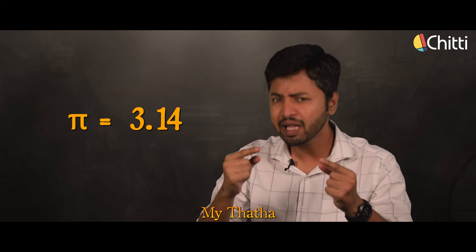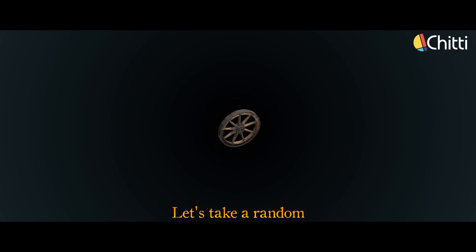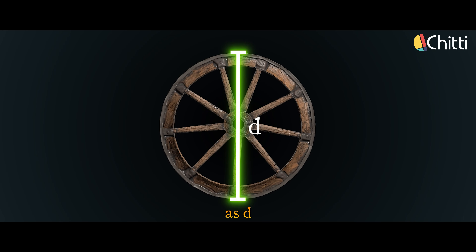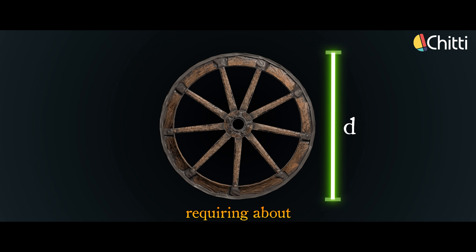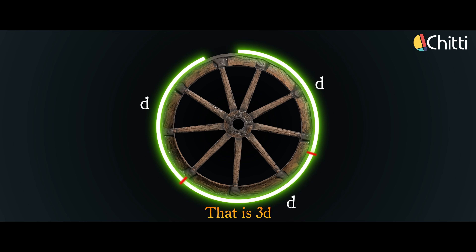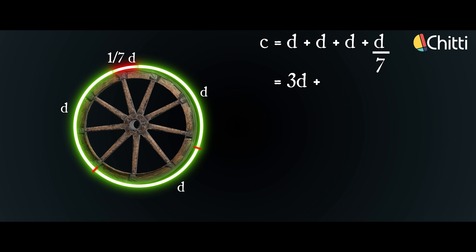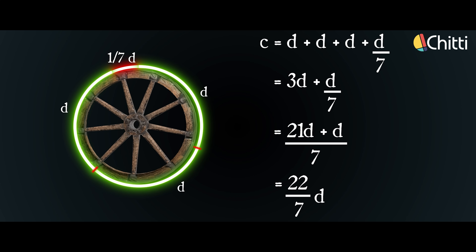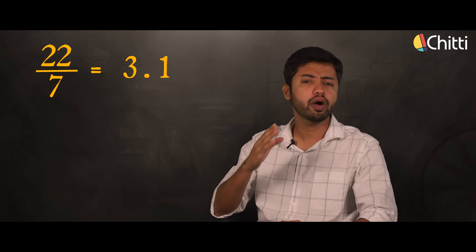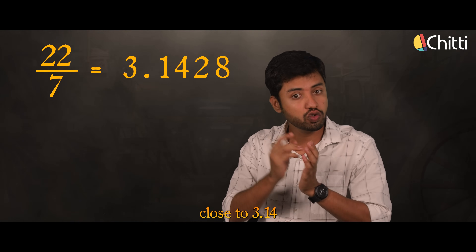Now let's talk about 22 by 7. My tata explained it like this: take a random bullock cart wheel, assume the diameter as d. To measure its circumference, we need about 1, 2, 3 — that is 3d — and that little extra, which is about 1/7 of d. So if we add it up, circumference equals d + d + d + d/7, which equals 3d + d/7. If we do the math, we get 22/7 times d. So 22/7 is taken as the value of pi. 22 divided by 7 equals 3.142857, which is close to 3.14.